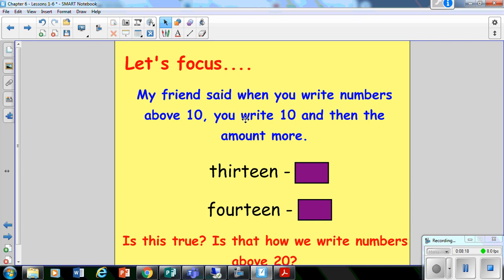Okay, now I have a friend. He says, when you write the numbers above 10, you just write 10 and then you add the amount, just like you do in a tens frame. So this is the word 13. And she said, oh, I just write 10 and a three. Is that right?